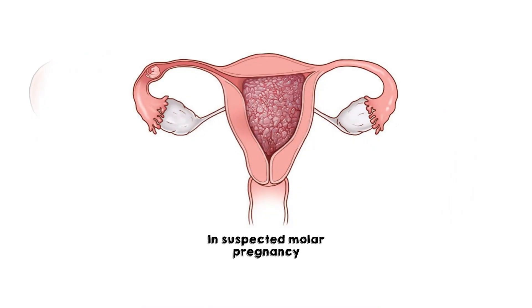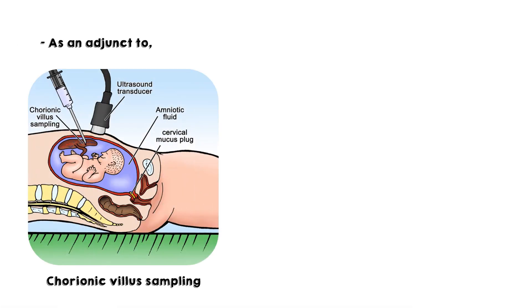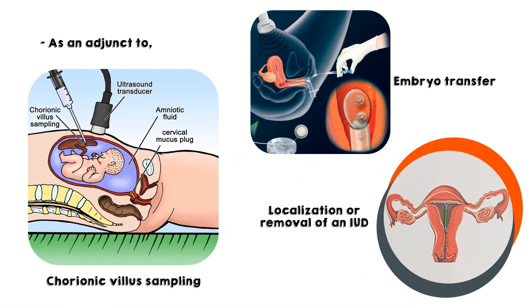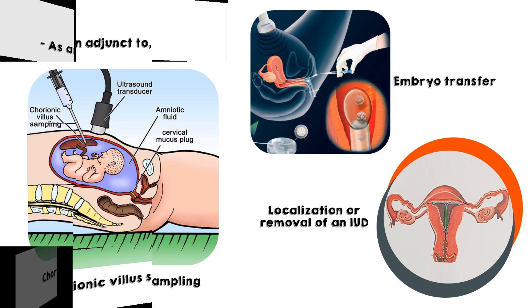Further first trimester indications include suspected molar pregnancy, and as an adjunct to chorionic villus sampling, embryo transfer, or localization and removal of an intrauterine device.